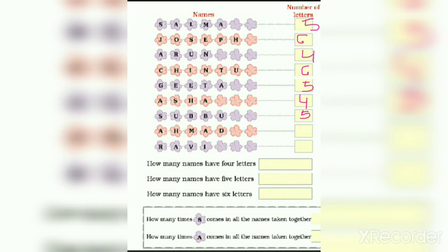Next, 1, 2, 3, 4, 5 letters. Here we have 5 letters. A, H, M, A, D. Next, R, A, V, I. Here we have 4 letters.